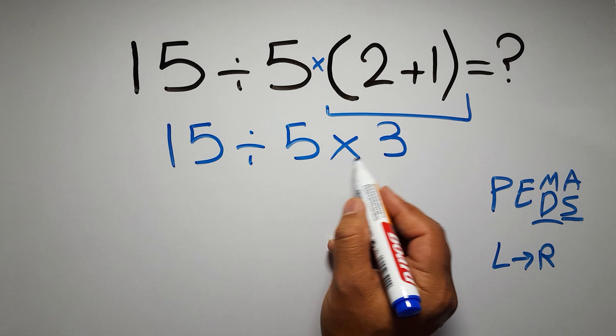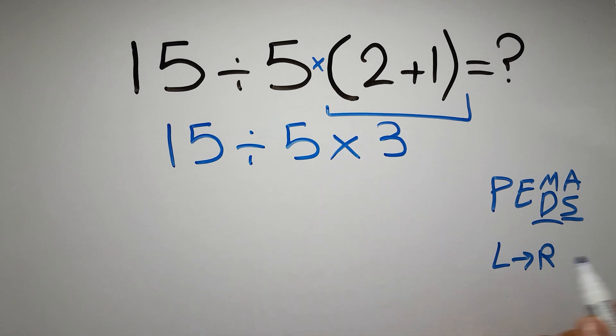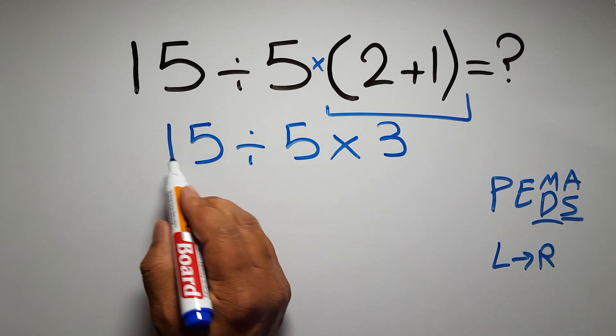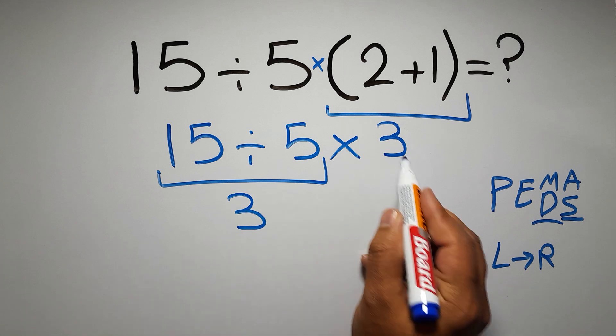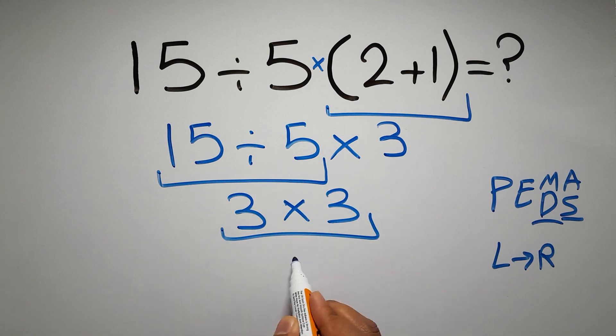Now we have one division and one multiplication. As I said, multiplication and division have equal priority, and we have to work from left to right. So here, first we have to do this division. 15 divided by 5 gives us 3, and 3 times 3 is just 9.